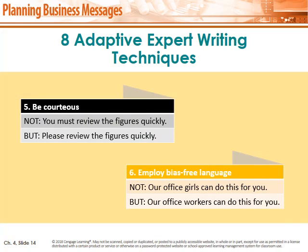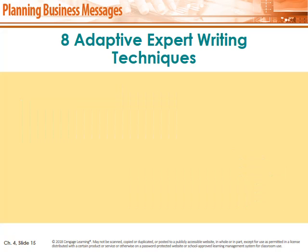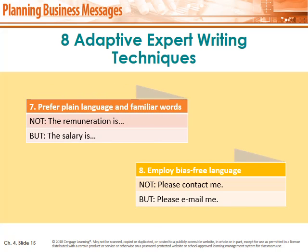Number five: be courteous — courtesy is important. Don't write 'you must review the figures quickly.' Instead write 'please review the figures quickly.' Show respect to the one you are sending the message to. Number six: employ bias-free language. Don't write 'our office girl can do this for you.' Write 'our office worker can do this for you.' Don't be gender biased. Number seven: prefer plain language and familiar words — don't use complex or difficult words; use easy and familiar words like the word 'salary.' Number eight: use specific language. Don't write 'please contact me' — write 'please email me.'